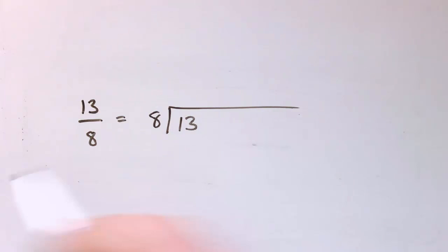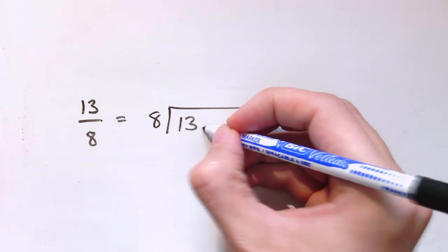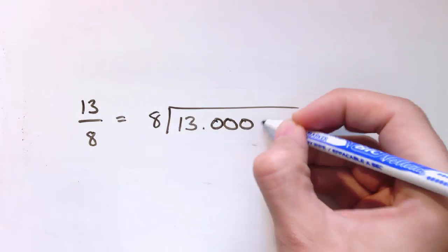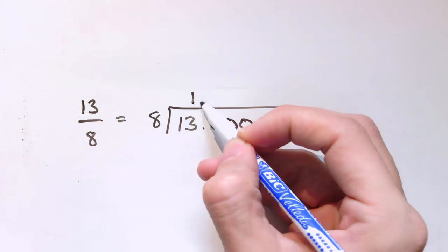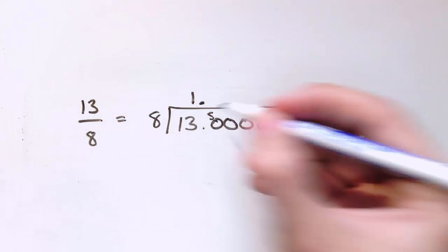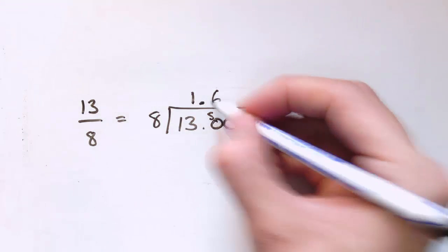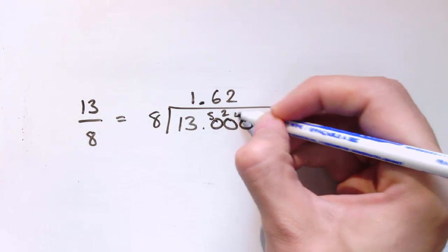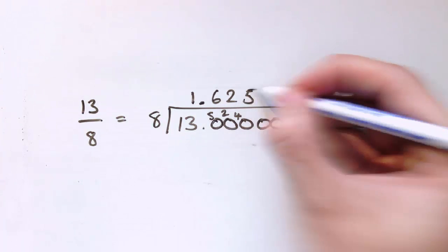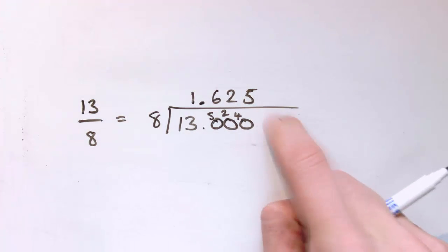So let's do another one. 13 over 8, that's 13 divided by 8. I'm going to need some 0's to do the fractional part. Now 8 into 13 go once, and I've got 5 left over. 8 into 50 goes 6 times with 2 left over. 8 into 20 go twice with 4 left over. And 8 into 40 this time go 5 times exactly. So I don't need the 0's beyond here.